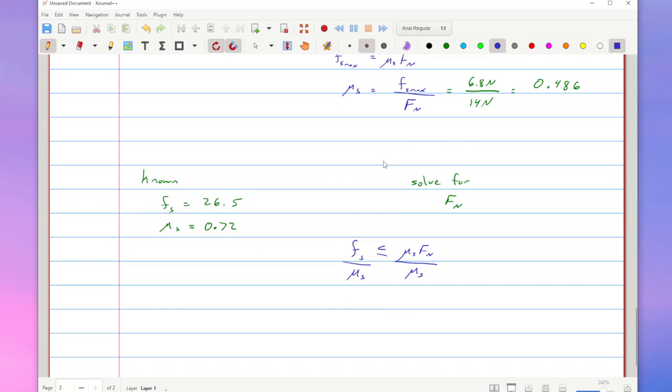To get fn by itself, I have to divide both sides by mu s. And that means my frictional force divided by mu s is less than or equal to the normal force. Or if I were to rearrange this, the normal force has to be greater than or equal to the static friction force and this mu s. Otherwise, we wouldn't actually have enough static friction.